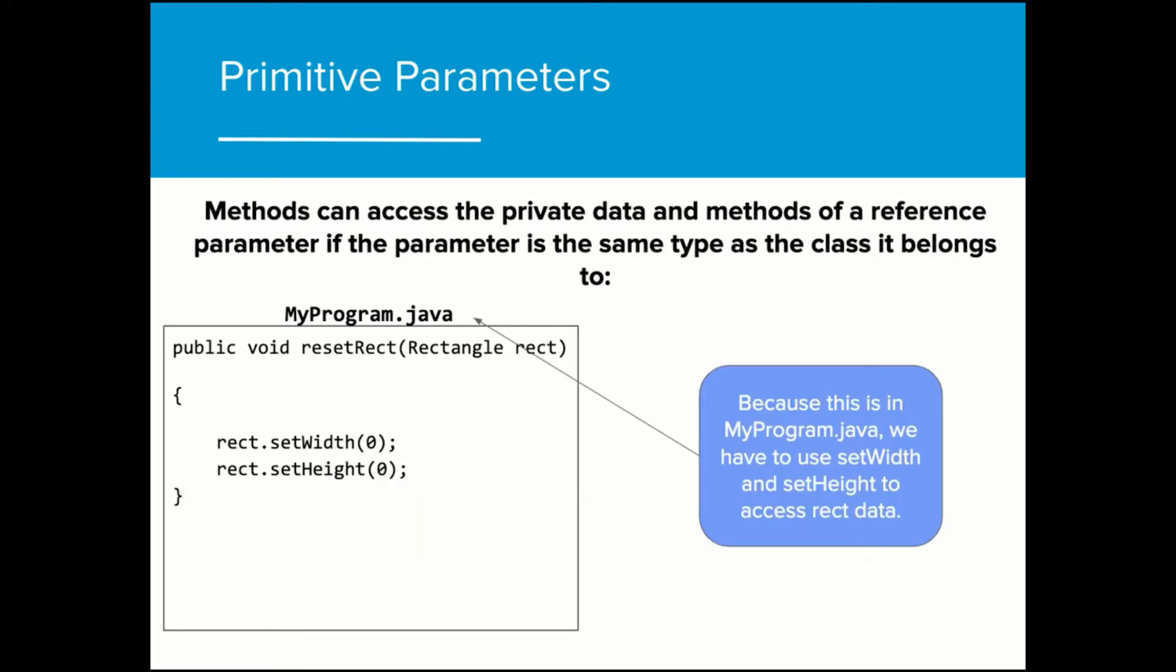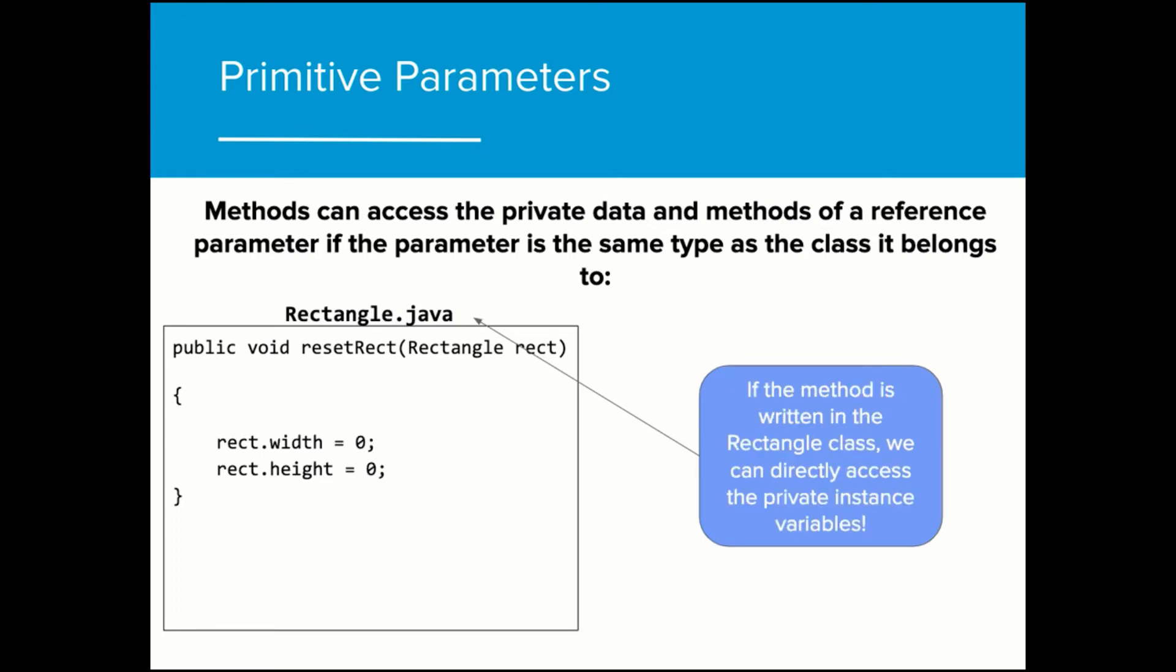If the formal parameter is a reference object, we can actually access the private data associated with that reference if the method has been written in the object's class file. In this example, because my program is not the file that the rectangle class was written in, we have to use rect.setWidth and rect.setHeight to access the instance variables. If the method was written inside the rectangle class file, then we could access the object's data by using the .variable notation. Notice that instead of using setWidth and setHeight, we can just change the value of width and height by writing rect.width and rect.height. This works when the parameter reference object is the same as the class file.